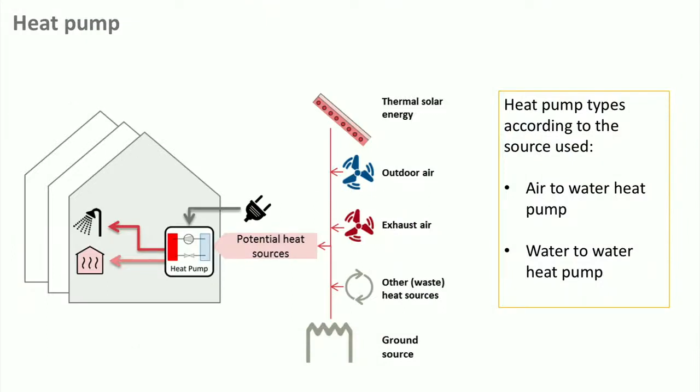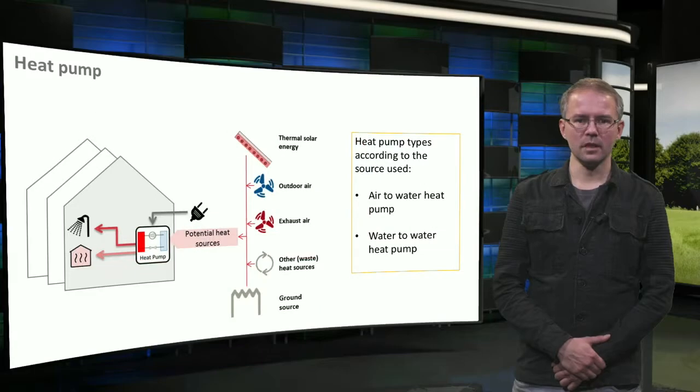A quick recap: a heat pump can move heat from one place to another by using electricity or gas, and in the process increases the output temperature to something we can use. We will now move on to the sources.